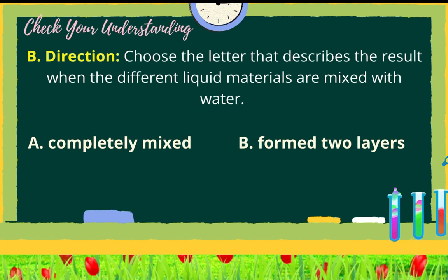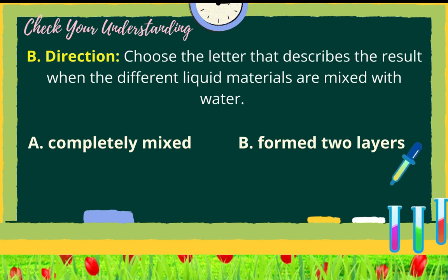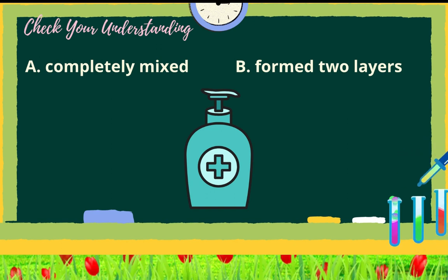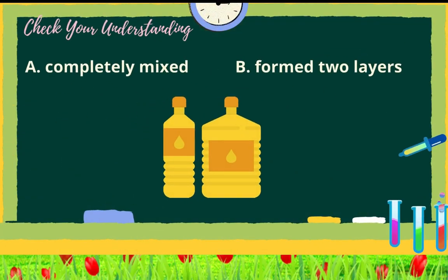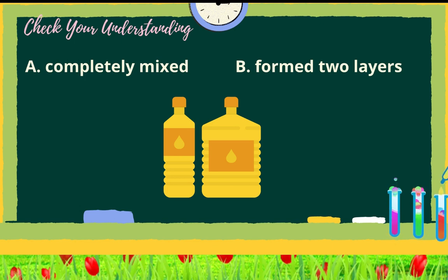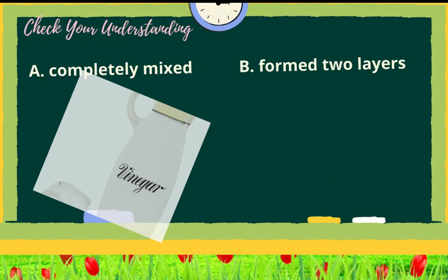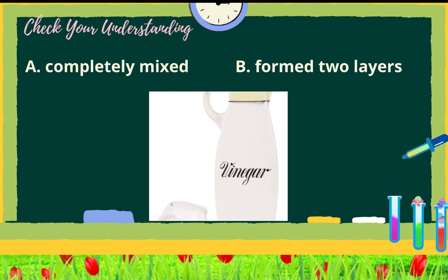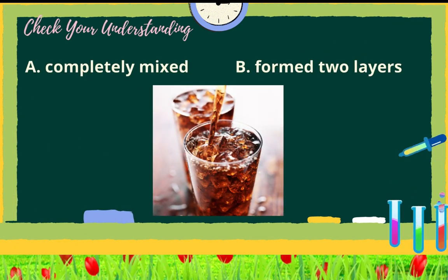For letter B, choose the letter that describes the result when the different liquid materials are mixed with water. Number 1: alcohol — completely mixed or formed two layers? Two: cooking oil. Three: vinegar. Four: soy sauce. And number five: soft drinks.